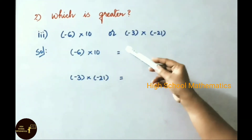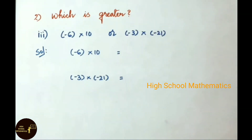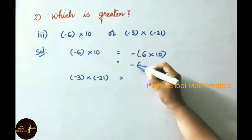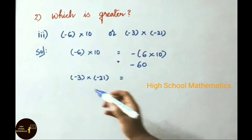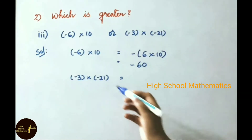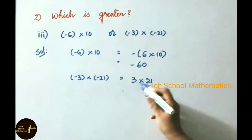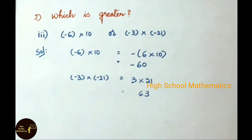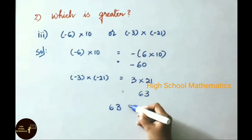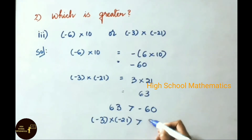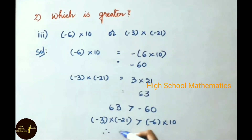Third sum: minus 6 into 10, or minus 3 into minus 21, which is greater? Minus 6 into 10 equals minus of 6 into 10, that equals minus 60. For minus 3 into minus 21 — minus into minus gives plus, 3 into 21 equals 63. So the answers are minus 60 and 63. 63 is greater than minus 60. Therefore, minus 3 into minus 21 is greater.